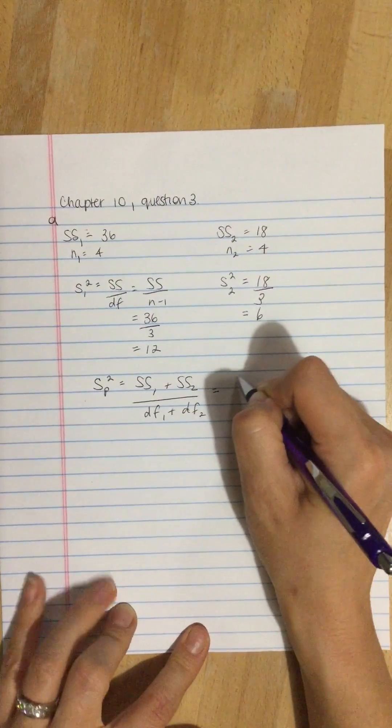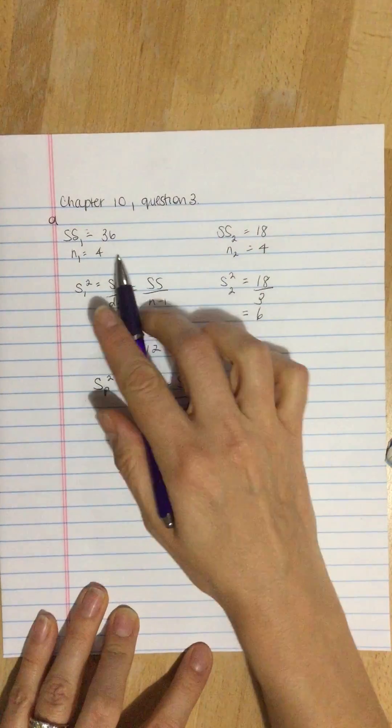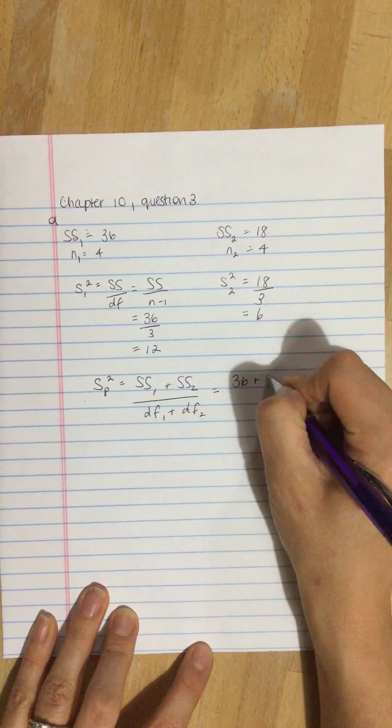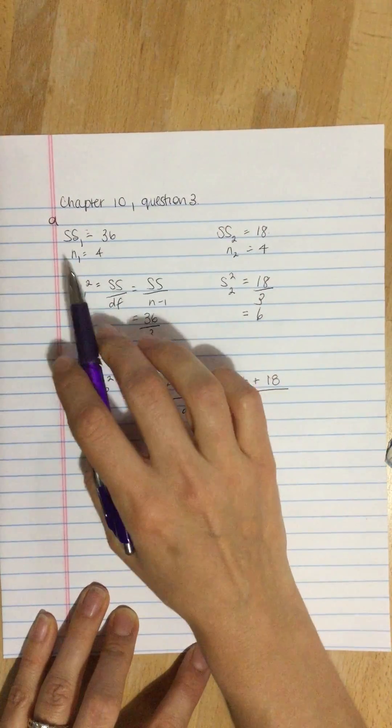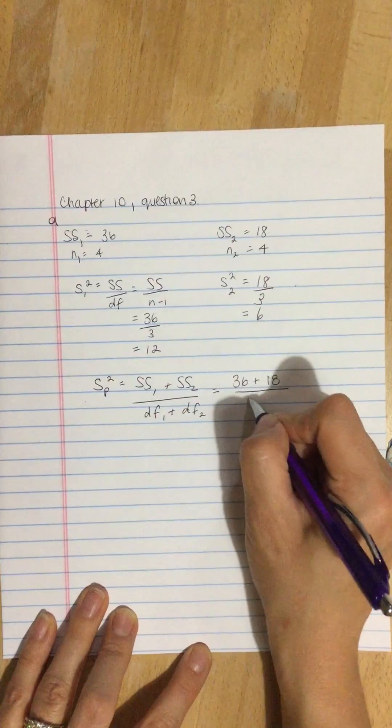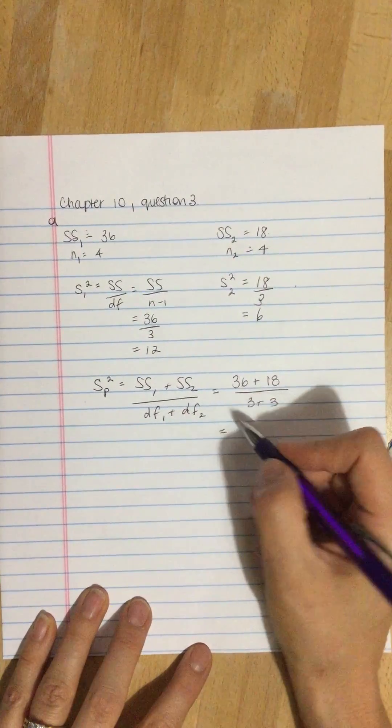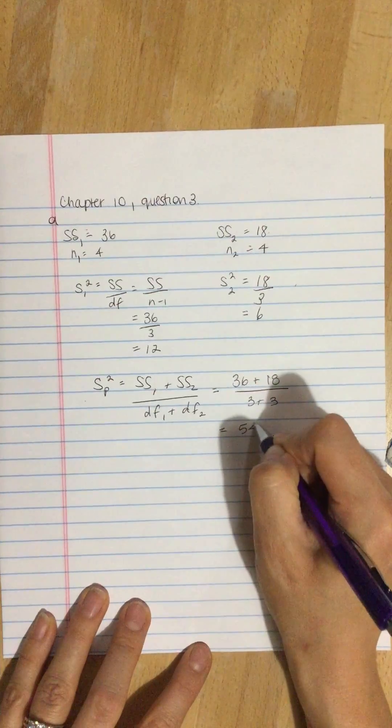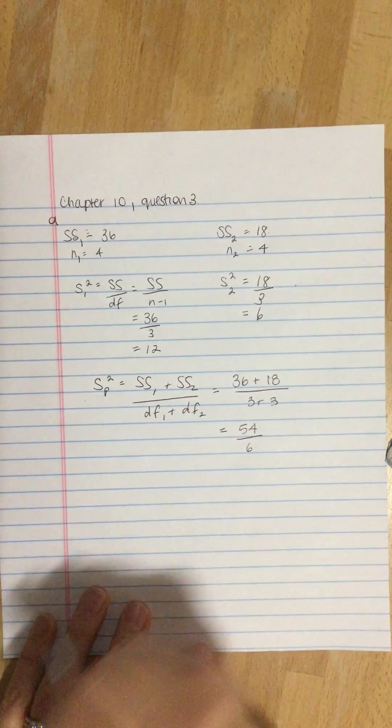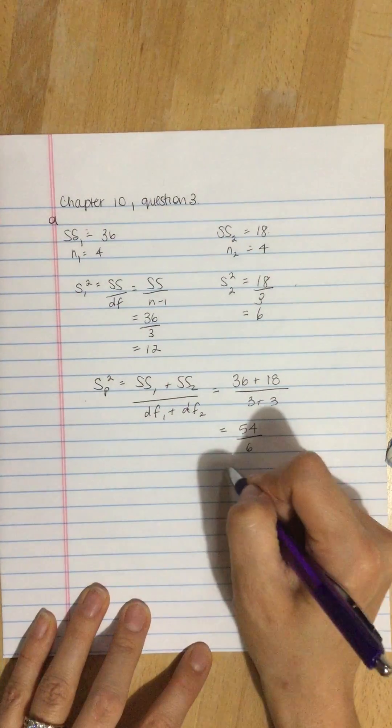That is 36 plus 18, divided by 3 plus 3. That's 54 divided by 6, which is equal to 9.